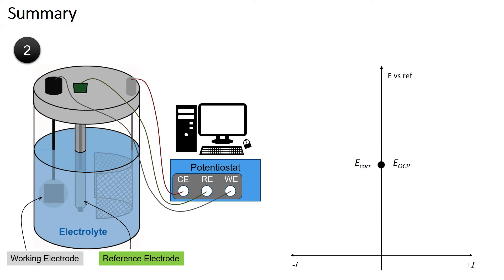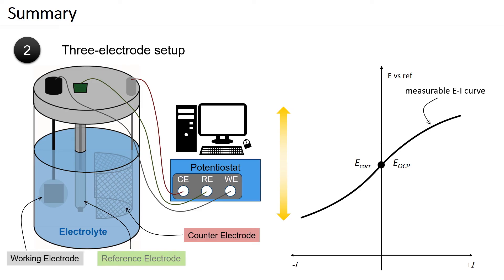To obtain quantitative kinetic information about a corroding system, the working electrode needs to be polarized. For this purpose a counter-electrode is added. This yields the so-called three-electrode setup that consists of a working electrode, a reference electrode, and a counter-electrode.